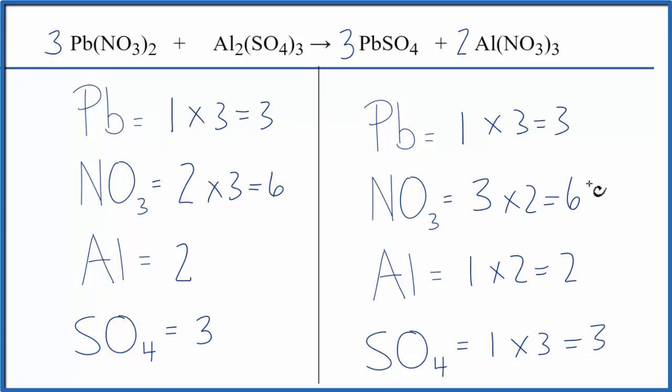This equation is balanced. So for an equation where we have these polyatomic ions that appear on both sides, we can count them as one item. And you can see it's made the balancing much easier and you're less likely to make a mistake.